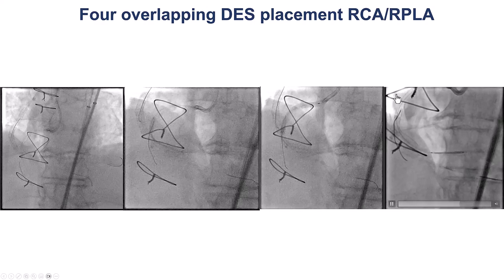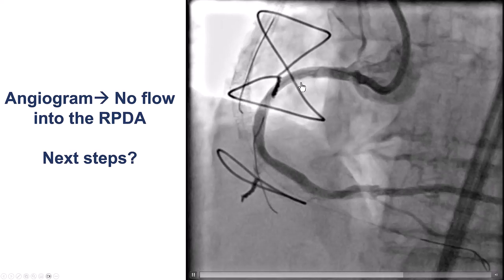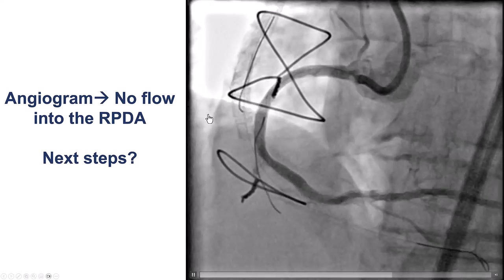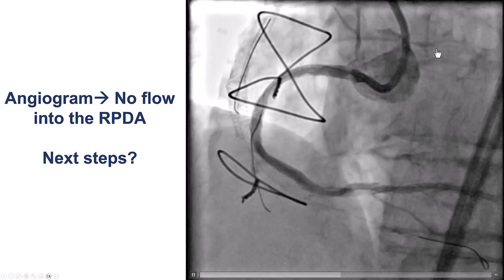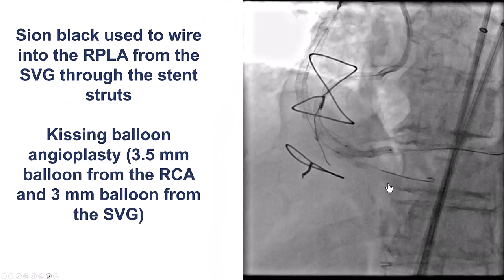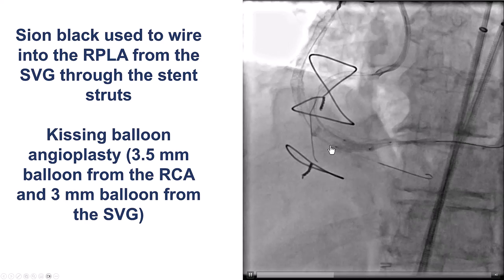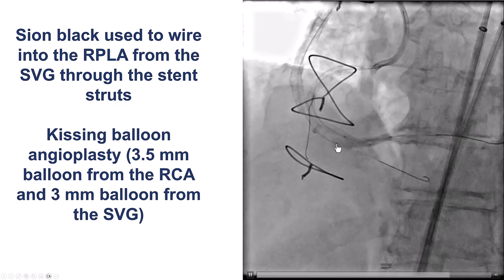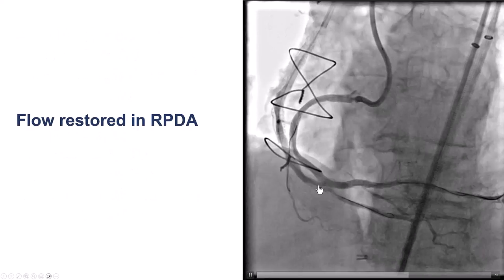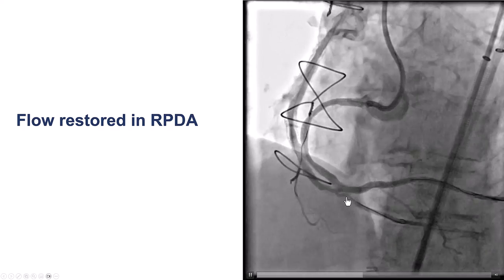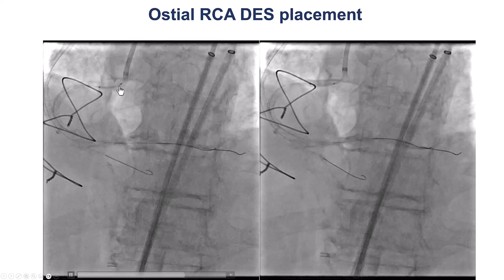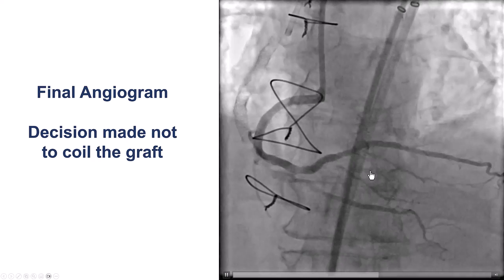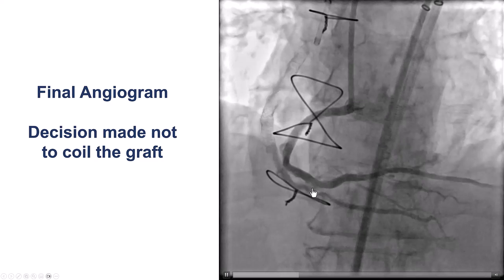We placed four drug-eluting stents, essentially all the way back to the ostium of the right coronary artery. Although flow was great before placing the final stent, we unfortunately lost flow into the PDA. But since we did have the saphenous vein graft, the patient was stable. We wired from the saphenous vein graft through the PDA back into the right posterior lateral and did a kissing balloon angioplasty with balloons through both the native and the saphenous vein graft. That restored good flow into the right posterior descending artery. We placed one more stent into the native right coronary artery, post-dilated the stents aggressively, and that provided a nice final result with TIMI flow into the right coronary artery. We still have good flow into the PDA.